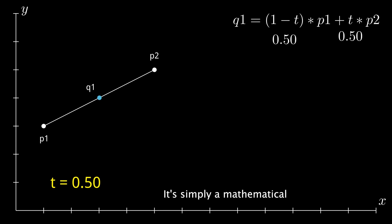It's simply a mathematical way of saying that as t increases, Q1 would move closer to P2 and as t decreases, Q1 would get closer to P1. When t is 0 or 1, Q1 would be P1 or P2 respectively. Really simple stuff to understand.